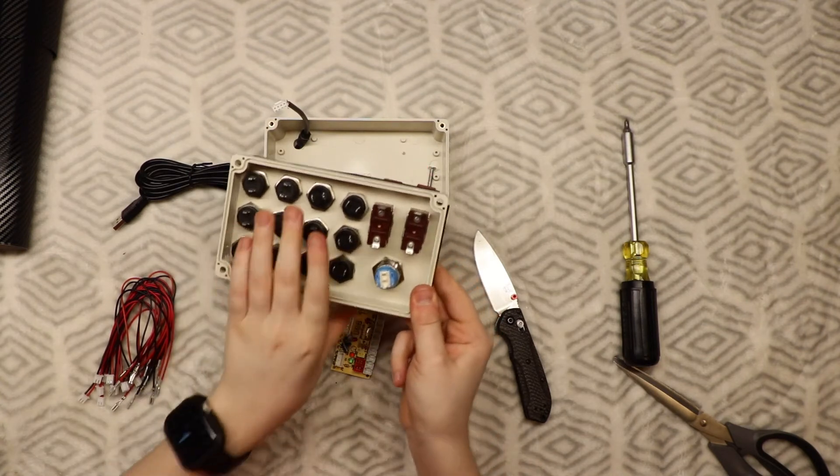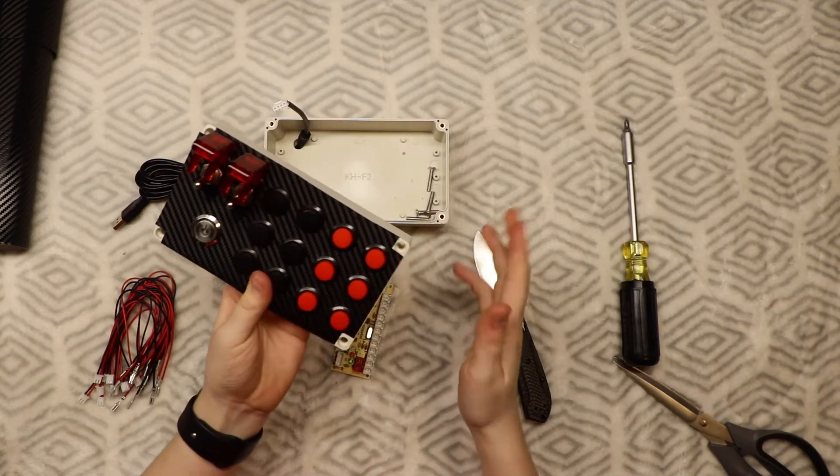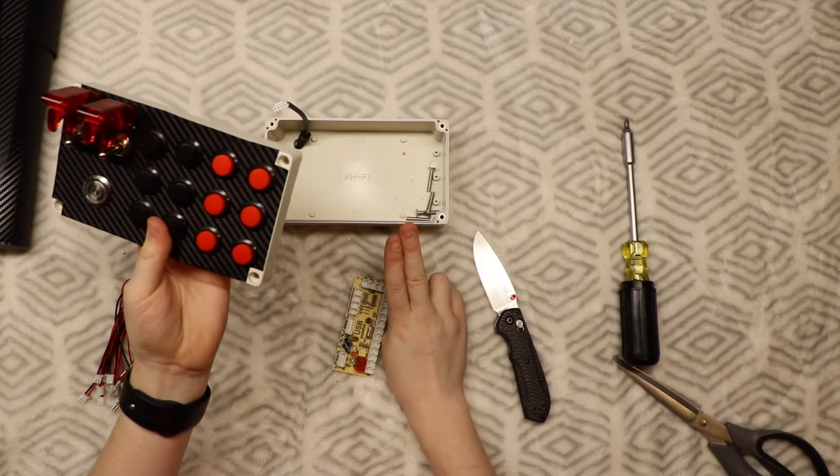Once you're done mounting and bolting all of the buttons and switches onto the front plate of the button box, then it's time to do the wiring.